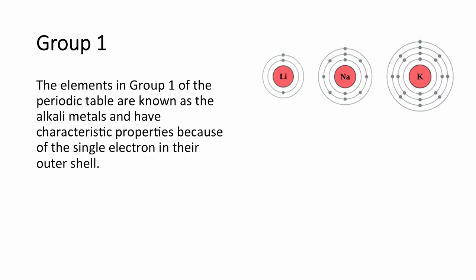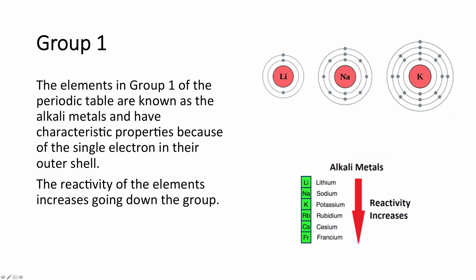Group 1 elements are known as the alkali metals because they have 1 electron in their outermost shell, which gives them their characteristic properties. As you go down the group, the alkali metals become more reactive because they have a weaker attraction to their outermost electron. This is because, as you go down the group, there are more shells in the way: lithium has one shell between the nucleus and the outermost electron, sodium has 2, potassium has 3, rubidium 4, caesium 5, francium 6. Also, as the atom gets larger the atomic radius increases, so the nucleus is further from the outermost electron — meaning the nuclear attraction is weaker and the element can lose its electron more easily.